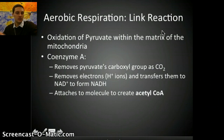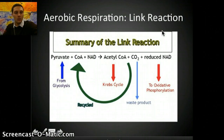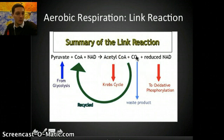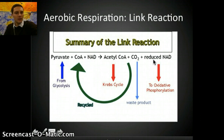Coenzyme A attaches to the remaining molecule from pyruvate to form acetyl-CoA. Acetyl-CoA is what enters the Krebs cycle. Starting from glycolysis, pyruvate plus coenzyme A and NAD+ gives us acetyl-CoA, which goes to the Krebs cycle. CO2 is released as a waste product, and the reduced NAD (NADH) will go on to oxidative phosphorylation — the electron transport chain portion.